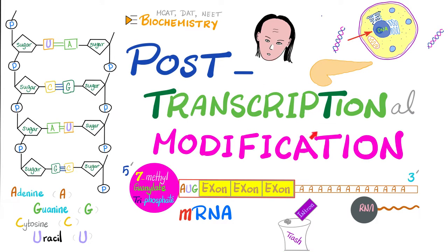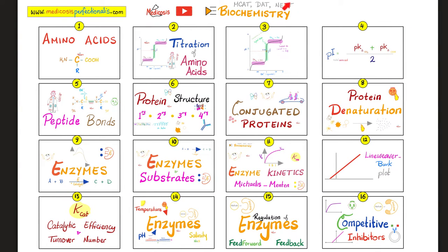Hey guys, it's Medicosis Perfectionatus, where medicine makes perfect sense. Let's continue our biochemistry playlist. In previous videos, we talked about DNA, RNA, purines, pyrimidines, nucleosides, nucleotides. We talked about DNA replication and transcription. Transcription means converting DNA into RNA, but the RNA is not ready yet. In the beginning, we call it heterogeneous RNA. We're trying to convert heterogeneous RNA into ready messenger RNA by means of post-transcriptional modification. Please watch the videos in this biochemistry playlist in order for maximum understanding and retention.